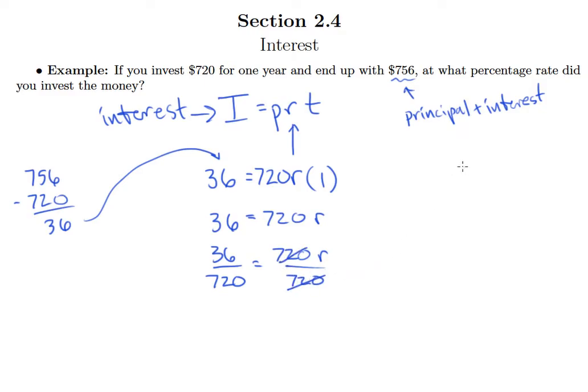So 36 divided by 720. Of course, 720 does not go into 36. We have a zero up there. Add a decimal point, add a zero. 720 does not go into 360, so we add another zero. 720 goes into 3,600 five times, and it turns out it goes in five times exactly.